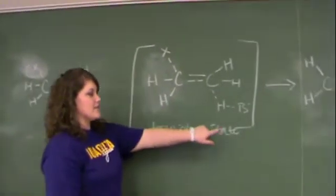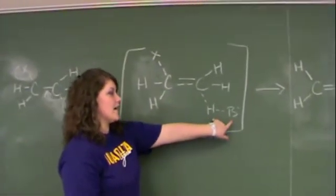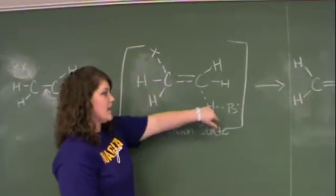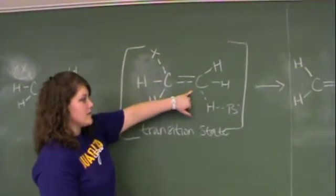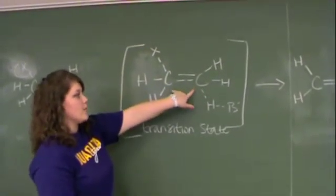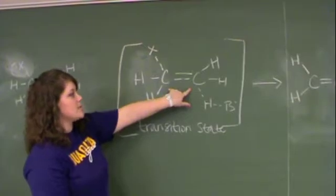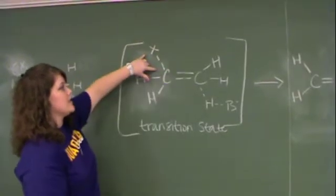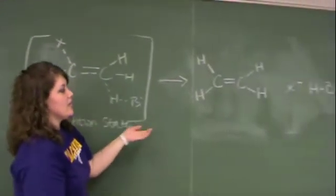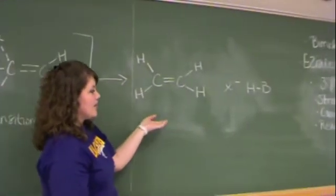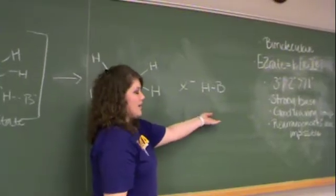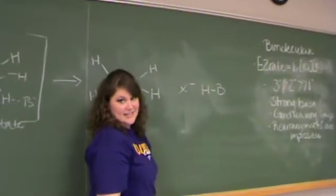In the transition state, we show the hydrogen and base bond being formed, the hydrogen and carbon bond being broken, forming the double bond between the carbons, forcing out the halide, giving you an alkene, a halide ion, and the conjugated acid.